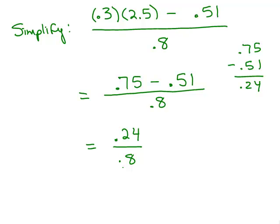Now I'm dividing with decimals so I want to make sure there's a whole number in the denominator. So I move the decimal place 1 to the right, and that becomes 2.4 over 8, a whole number.